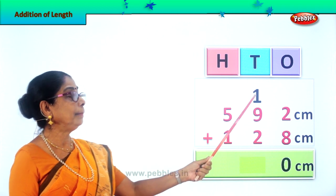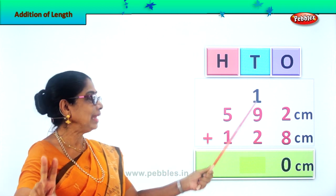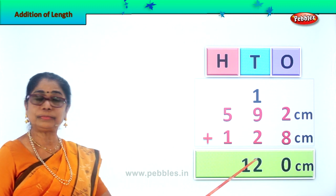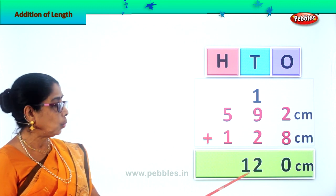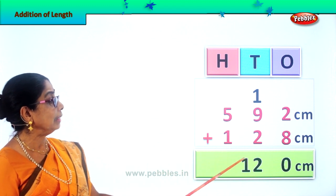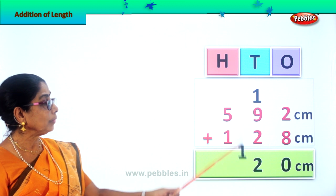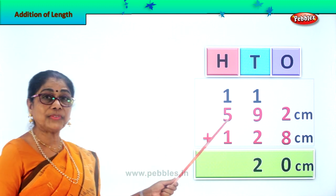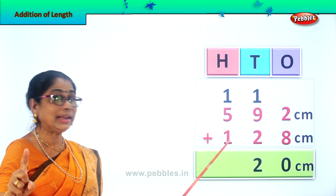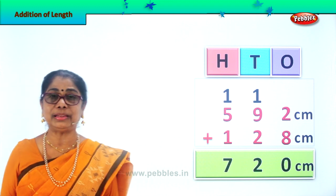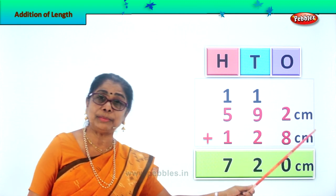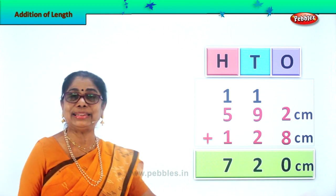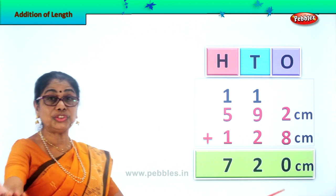So we have 9 plus 1 is 10. 10 plus 2 is 12. We leave the 2 in the 10's place. The 1 ten we take and put it in the 100's place. Now we will add all the numbers in the 100's place. 1 plus 5 is 6. 6 plus 1 is 7. So we write down 7 here. 592 centimeters plus 128 centimeters is equal to 720 centimeters — 720 centimeters is your answer.